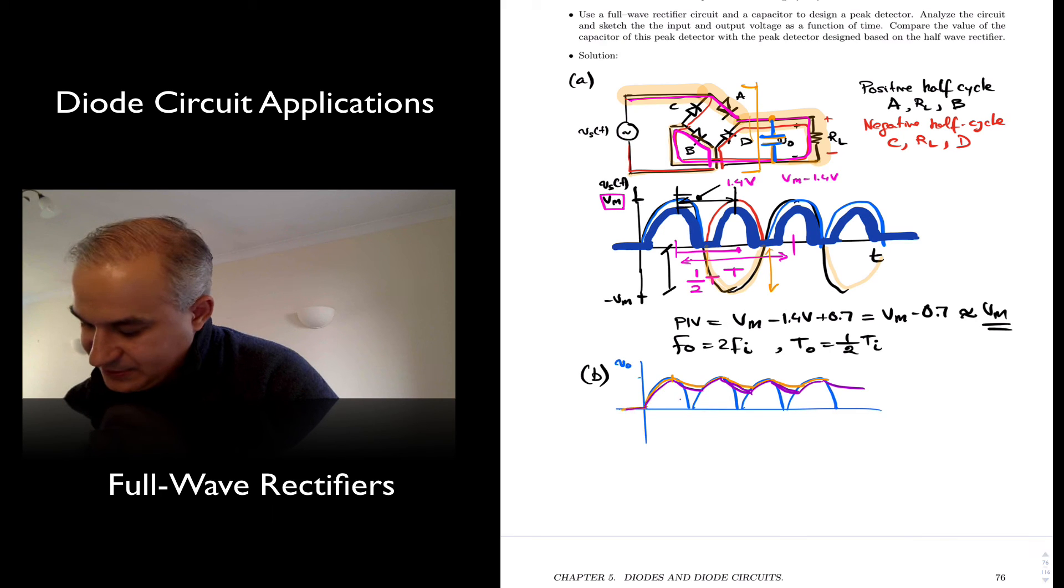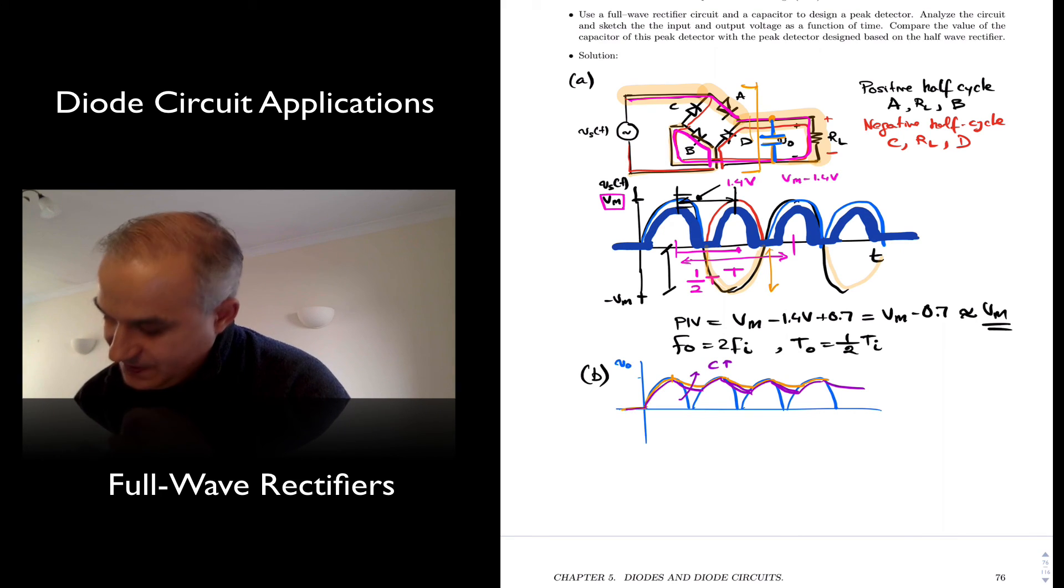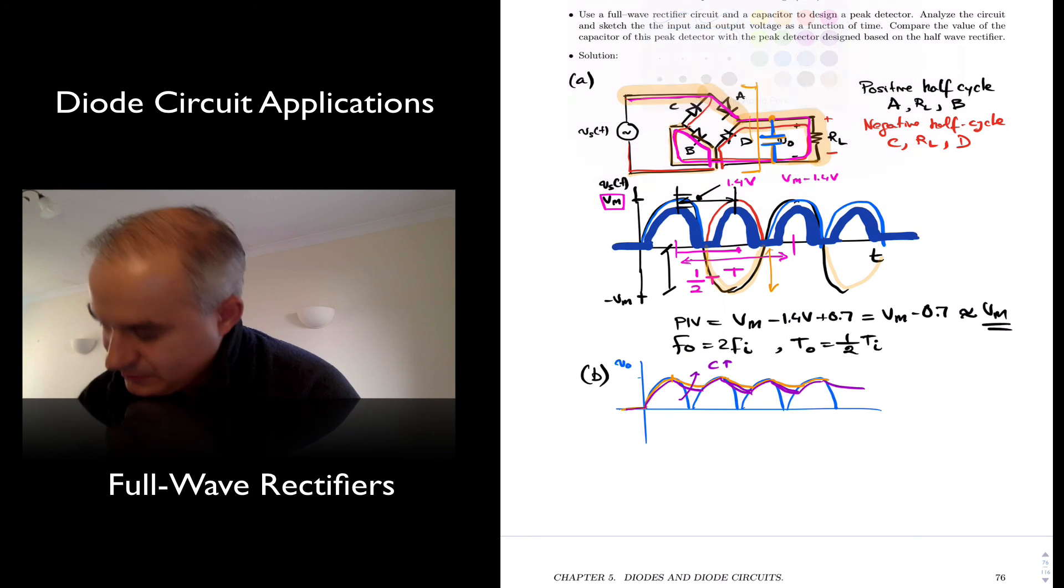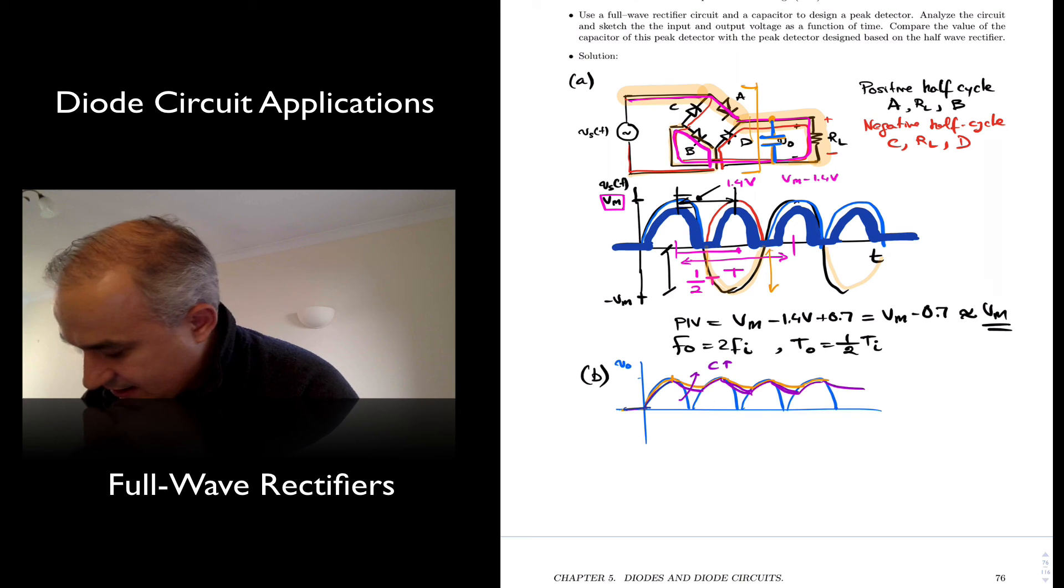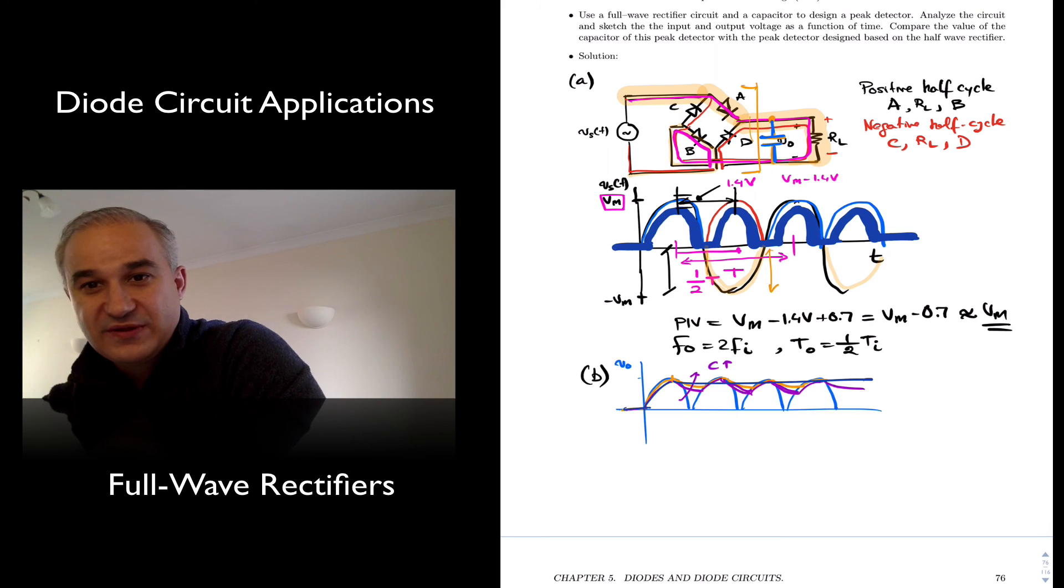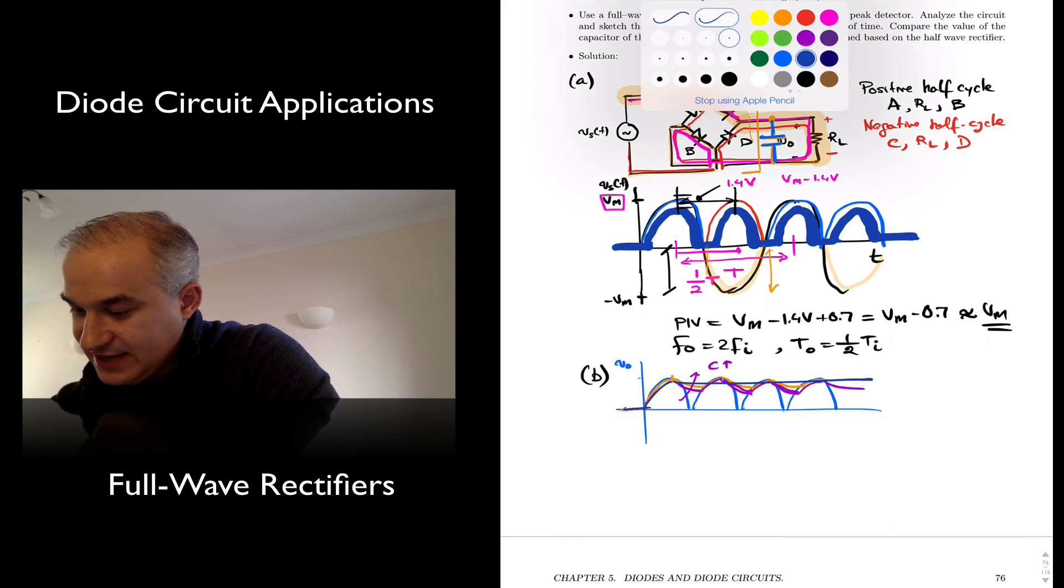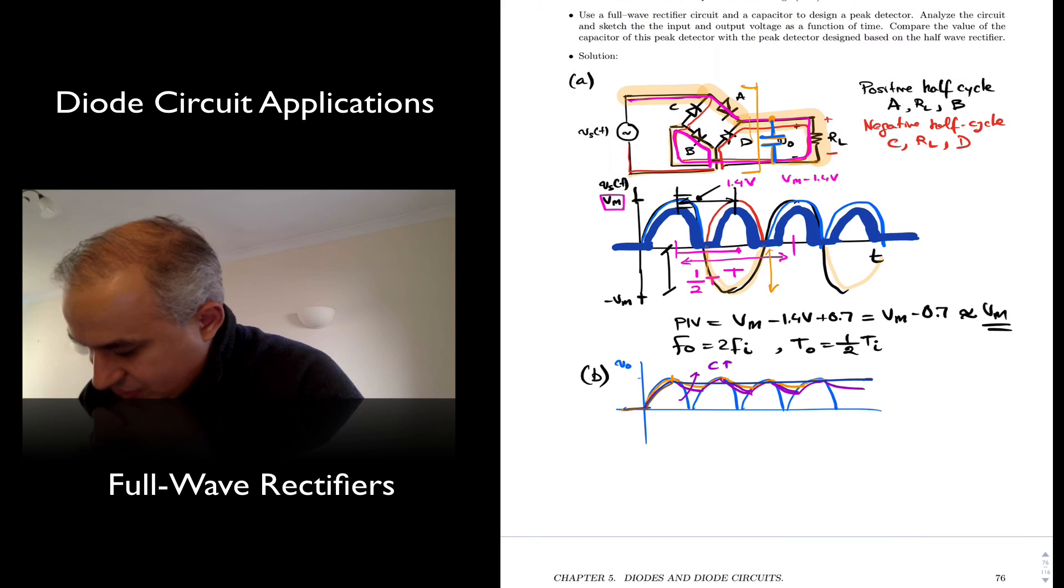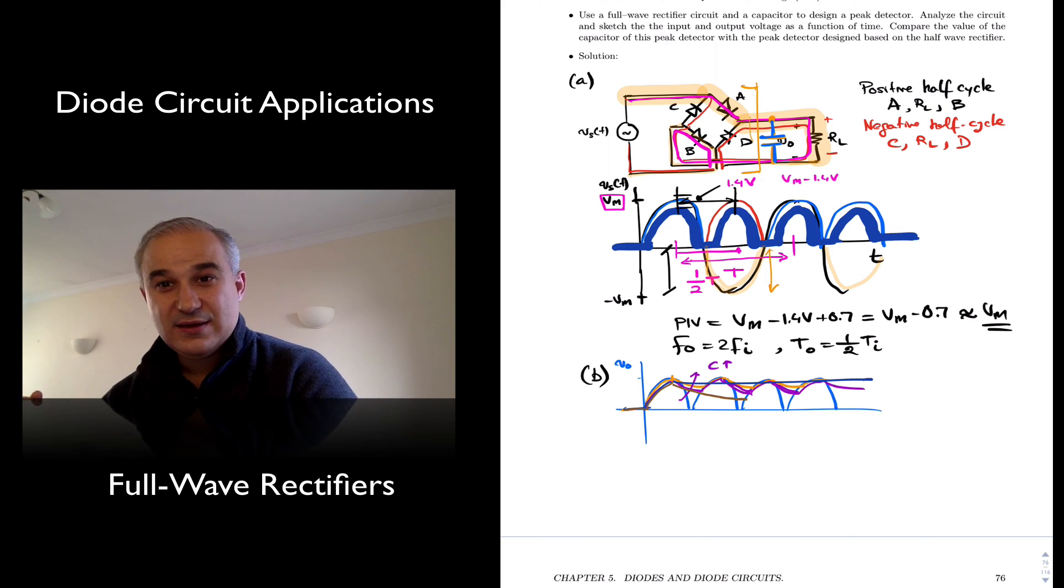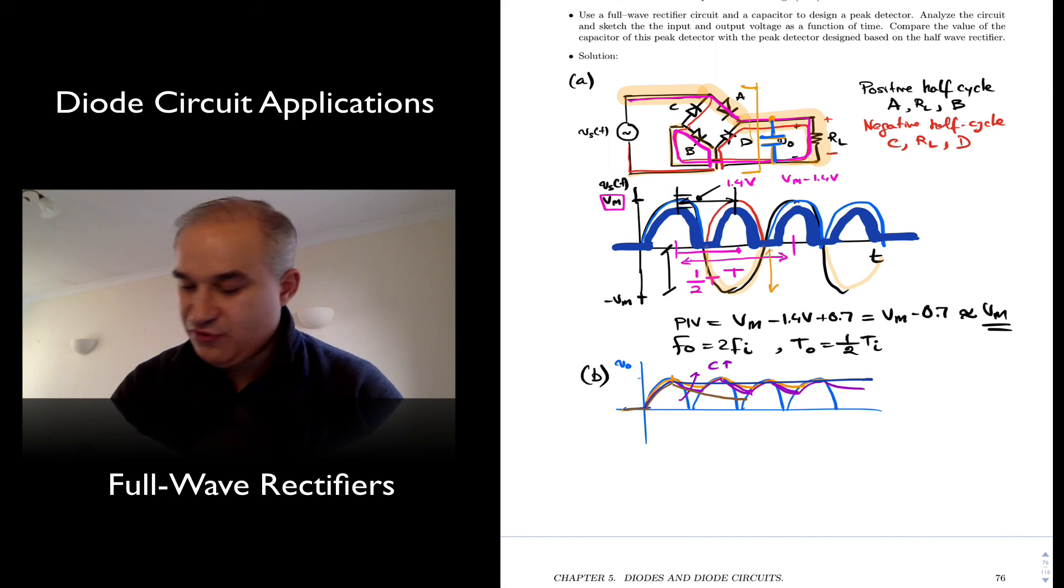As you increase the capacitor, as the capacitor goes up, this becomes flatter and flatter. So you could conceivably create something like this, which is what we want in a power supply. Notice that compared with the half-wave rectifier, in the full-wave rectifier, you're going to need a lower capacitor. Why is that? Because in the full-wave rectifier, the capacitor needed to charge and then keep it all the way to here. Right? The period is half.